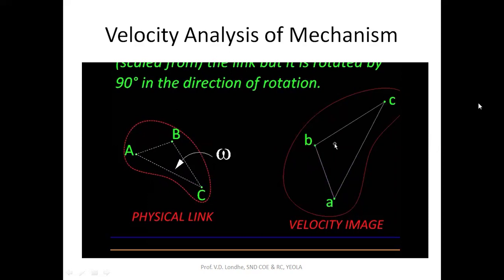A special case is when the triangle is degenerate — that is, the three points are collinear. In that case, we only need to consider the ratio in which one point divides the line joining the other two points.